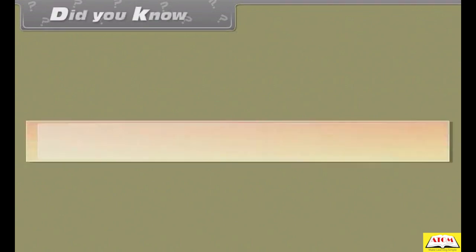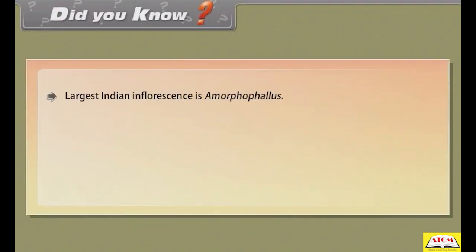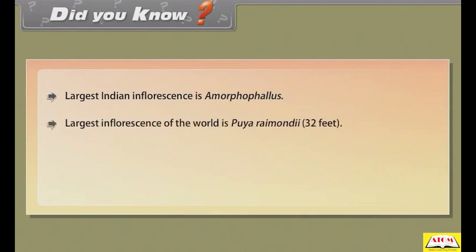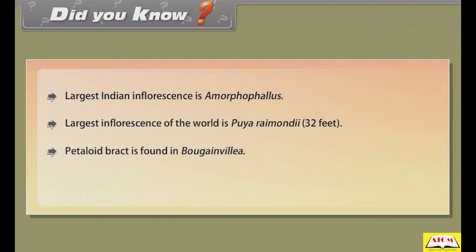Did you know: the largest Indian inflorescence is Amorphophallus; the largest inflorescence in the world is Puya raimondii at 32 feet. Petaloid bracts are found in Bougainvillea. Synanthium is an open hypanthodium.